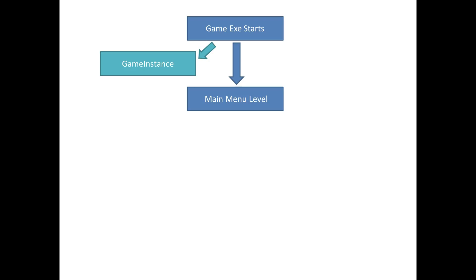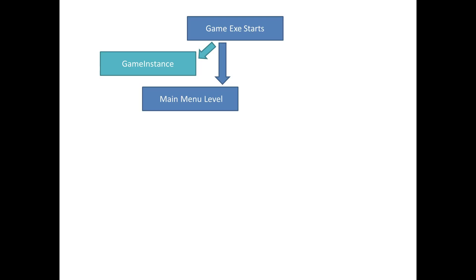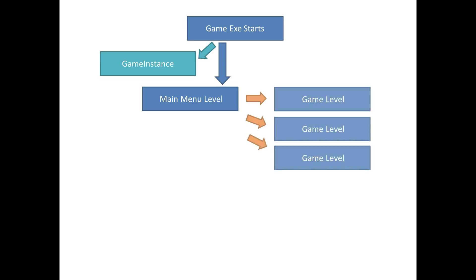What we're going to do is start the game from a main menu level — basically start the game with an empty level just showing the main menu user interface. That main menu user interface can then load any other game levels. We can have multiple game levels and the main menu will always have the choice to spawn those other levels, and then those levels will return back to the main menu. That'll be the menu cycle.